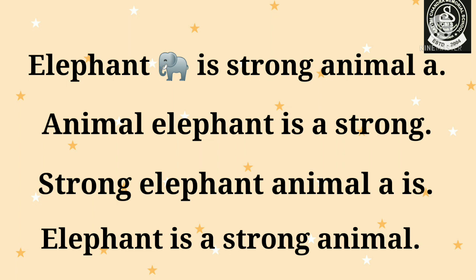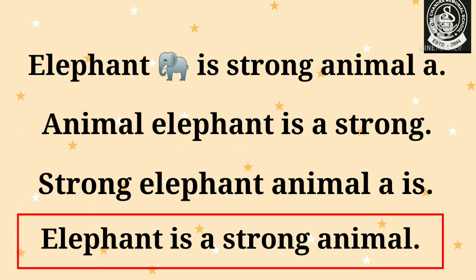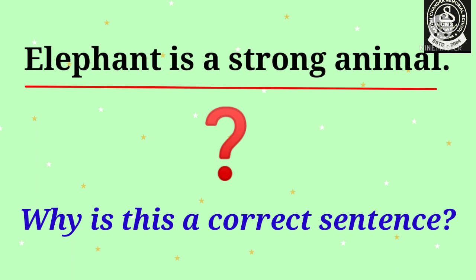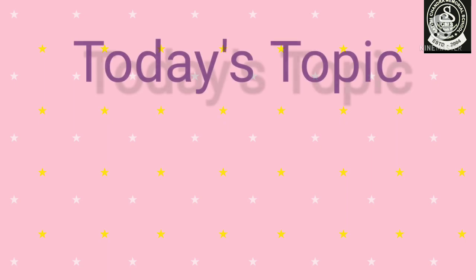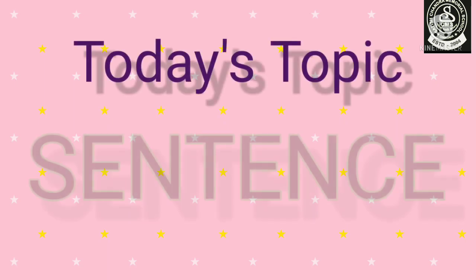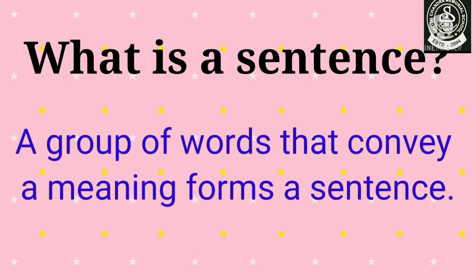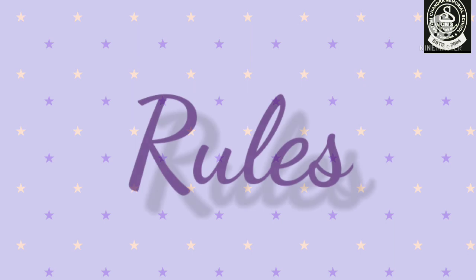The last sentence is: 'Elephant is a strong animal.' Now we can understand the meaning, so it is a correct sentence. The words in this sentence are arranged in a proper order and this sentence is a meaningful sentence. By now you have guessed the topic — today's topic is 'sentence.' A group of words that convey a meaning forms a sentence.